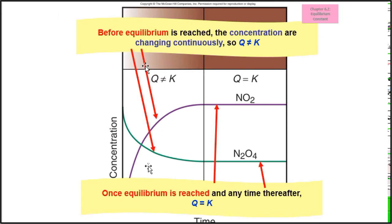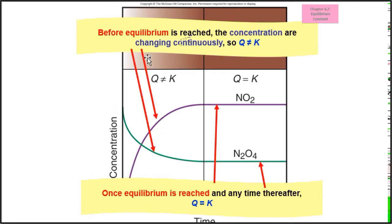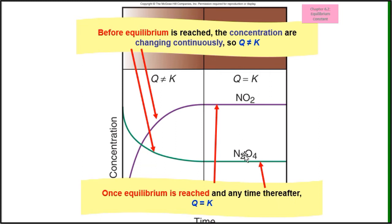Before equilibrium is reached, the concentrations are changing continuously because Q is different from K. Once equilibrium is reached at any time thereafter, Q equals K. Let's try some example questions.